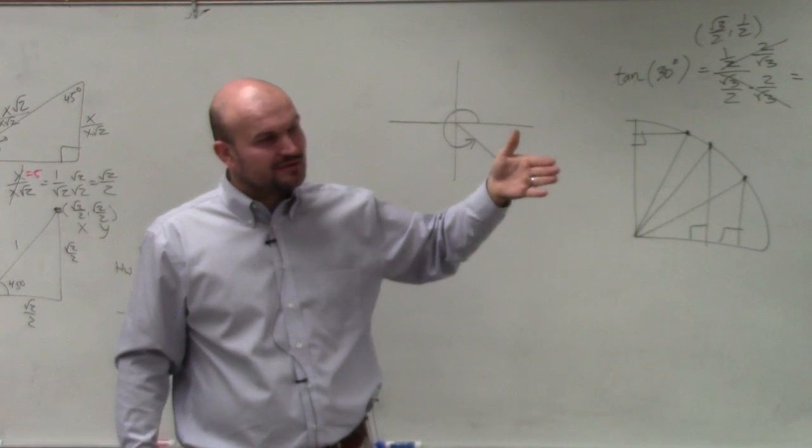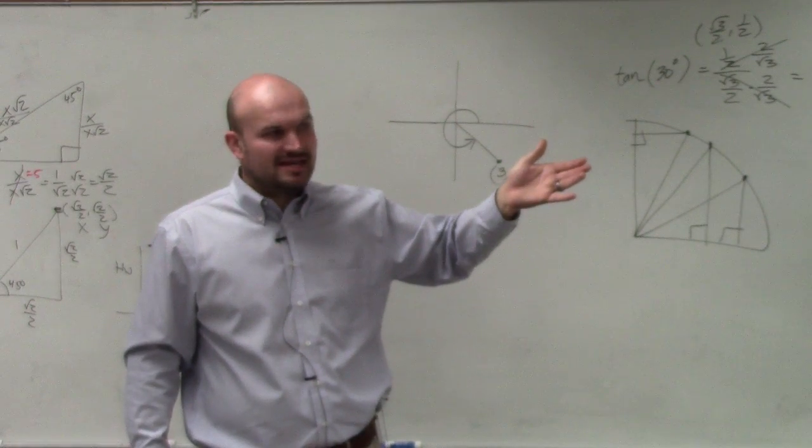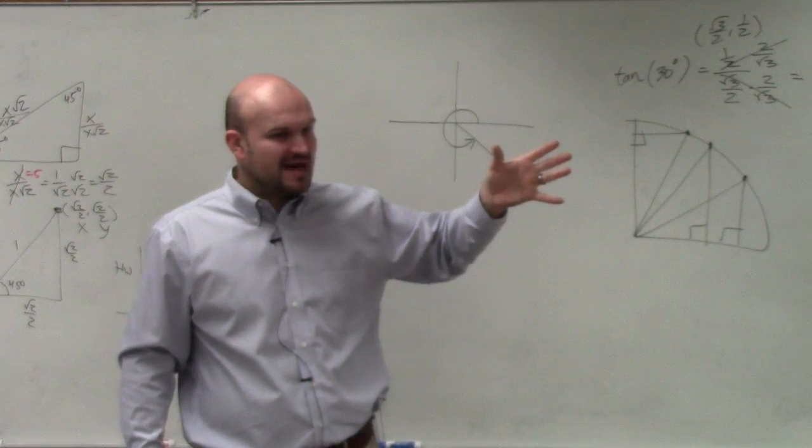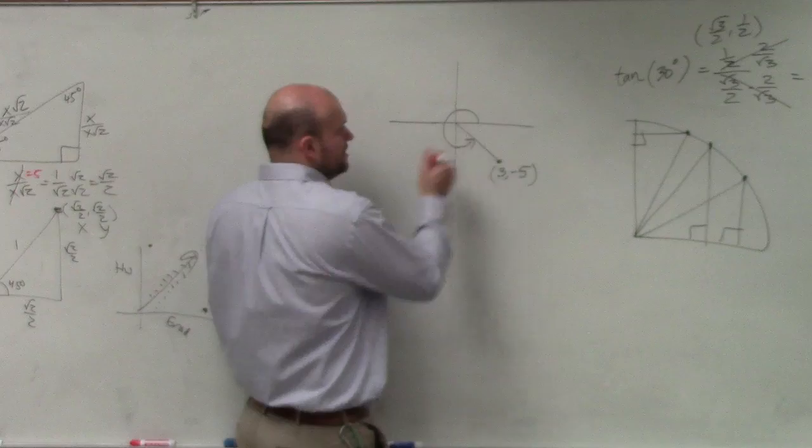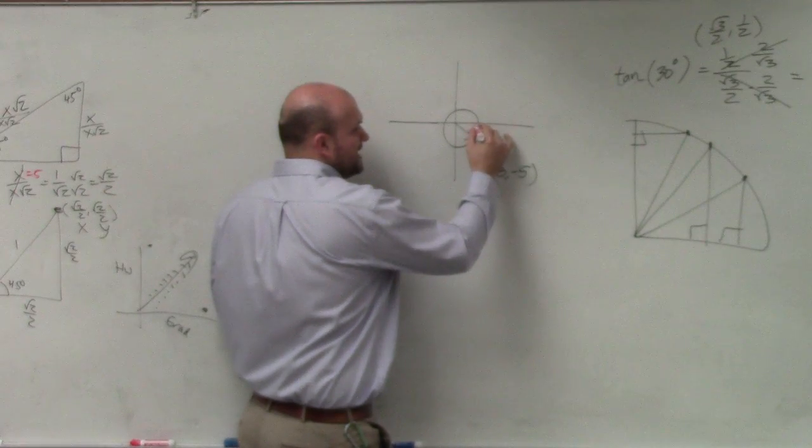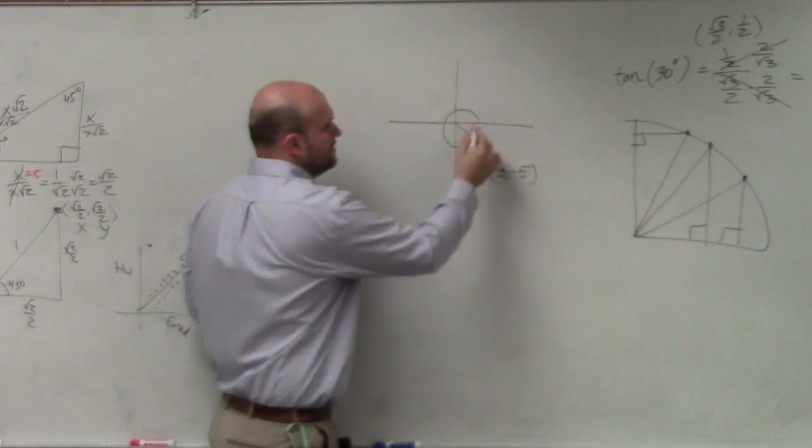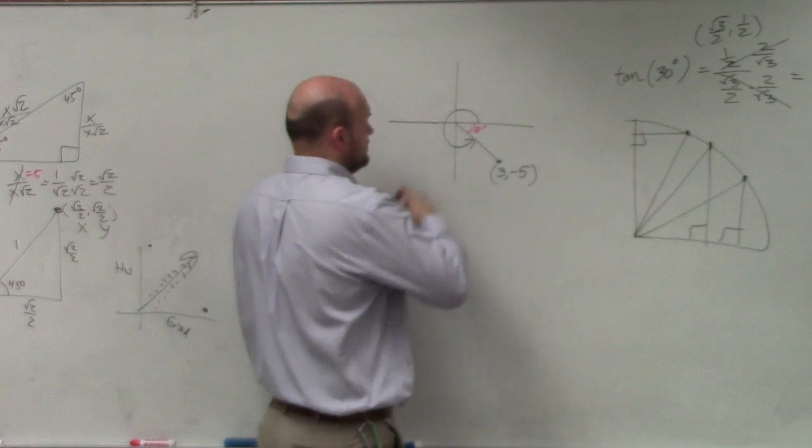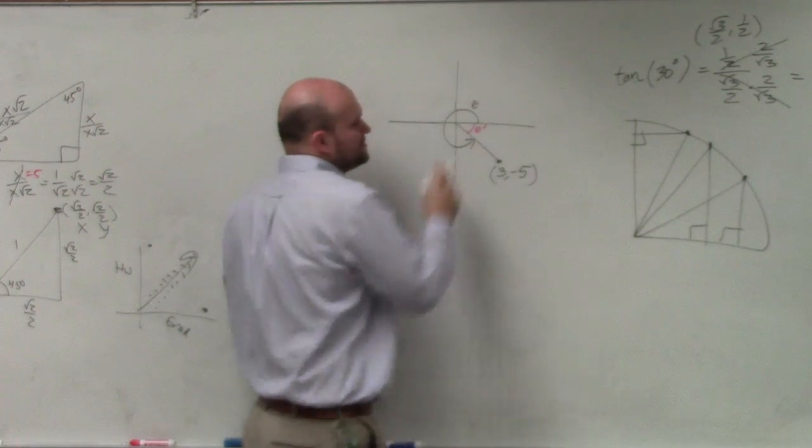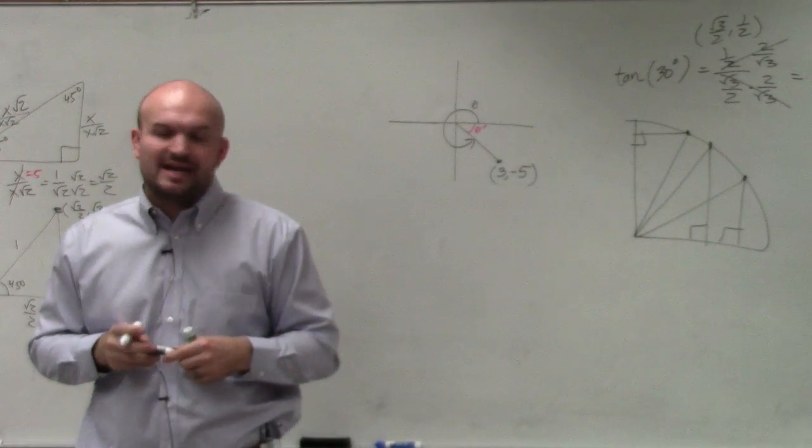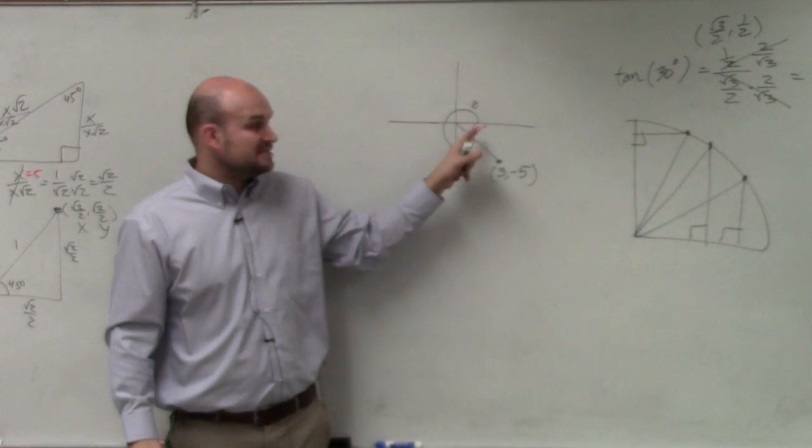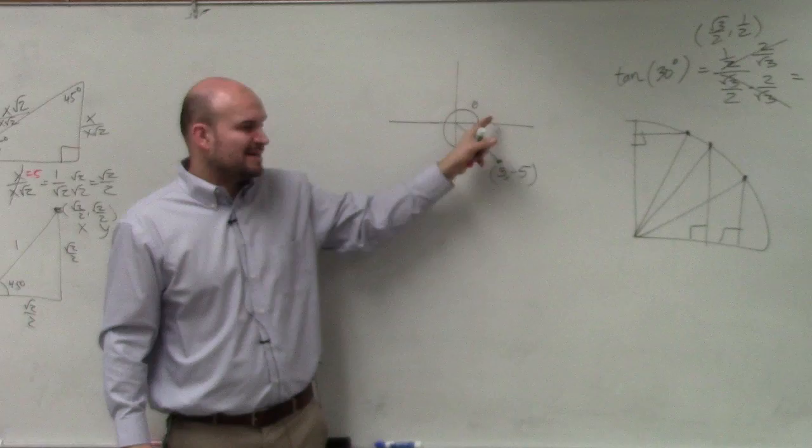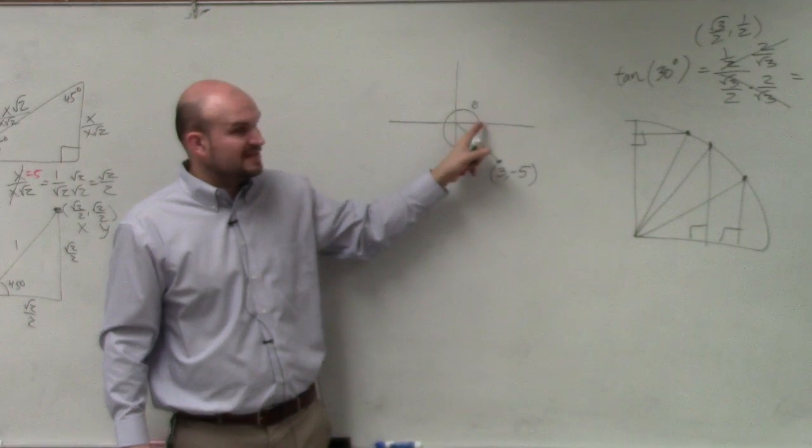The reference angle had the same value as the angle. It was the exact same value. And the reference angle was the acute angle between the terminal side and the x-axis. That's what we called our reference angle. So what I want to do is, if I'm given a point, create a triangle using the reference angle. Again, the reference angle is the acute positive angle. It's always positive, but it's the acute angle between the terminal and the x-axis.